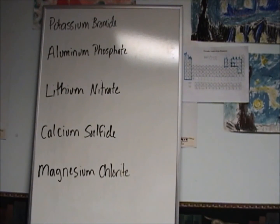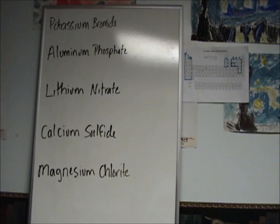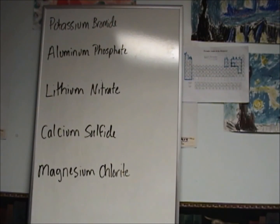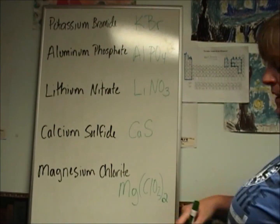Last couple — see if you can get these right. Write the formulas for potassium bromide, aluminum phosphate, lithium nitrate, calcium sulfide, and magnesium chloride.